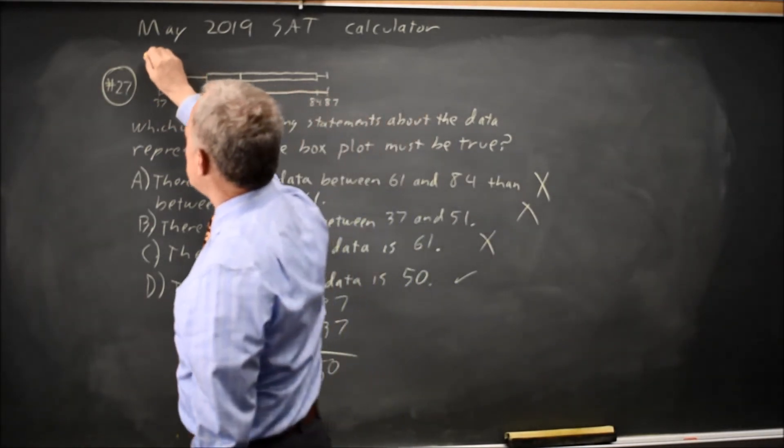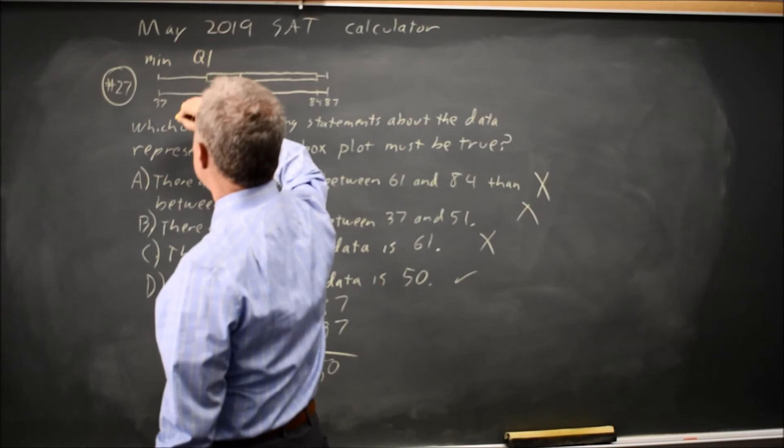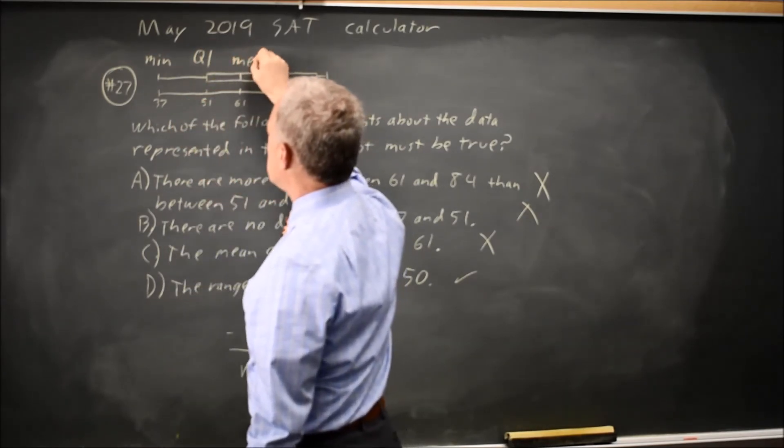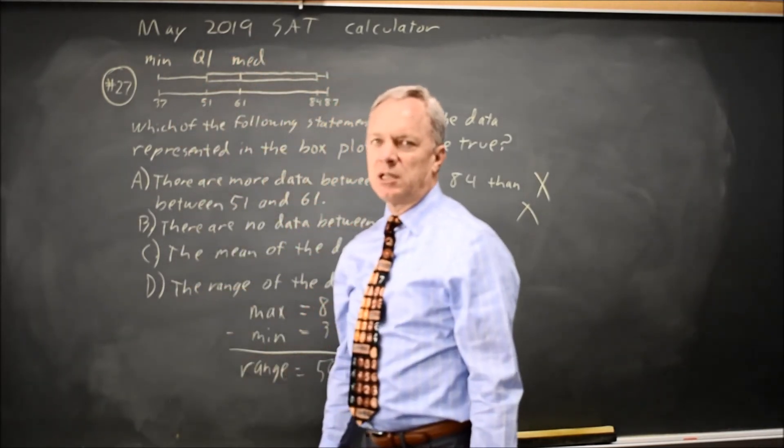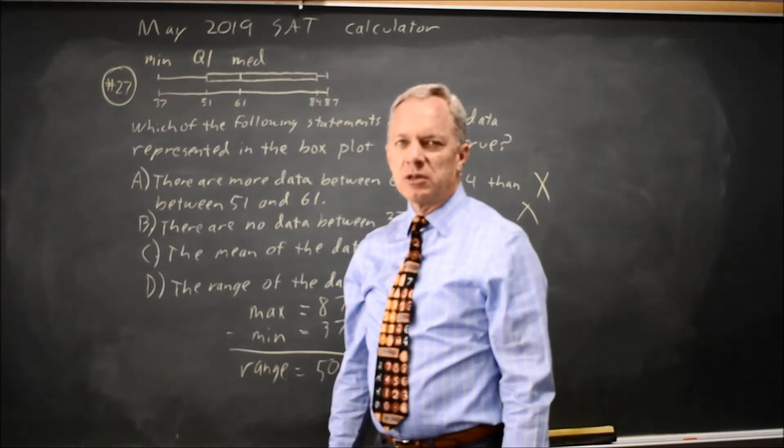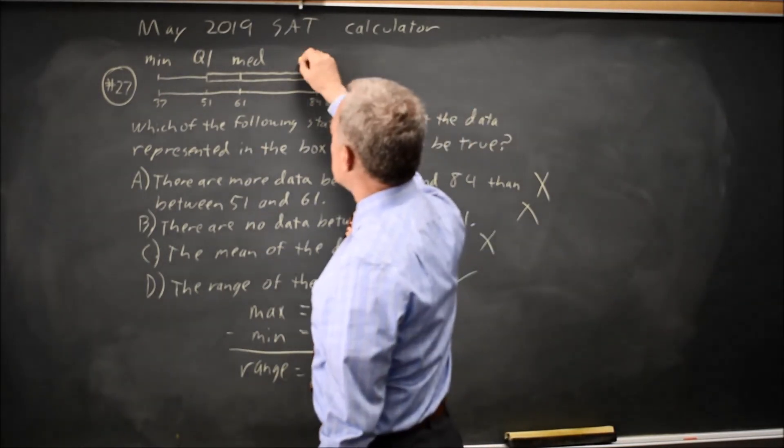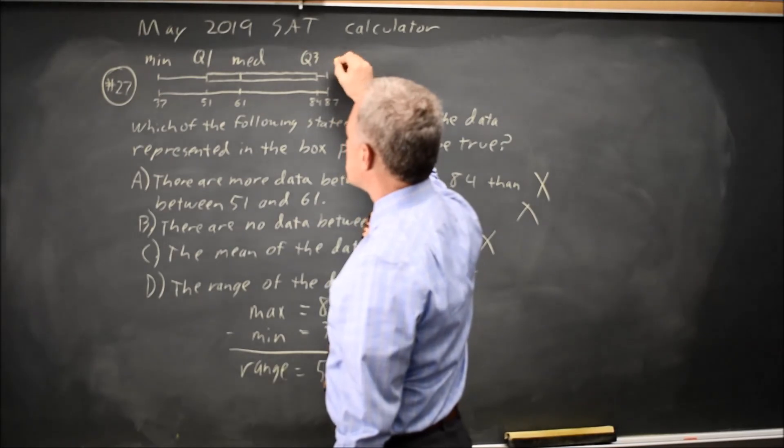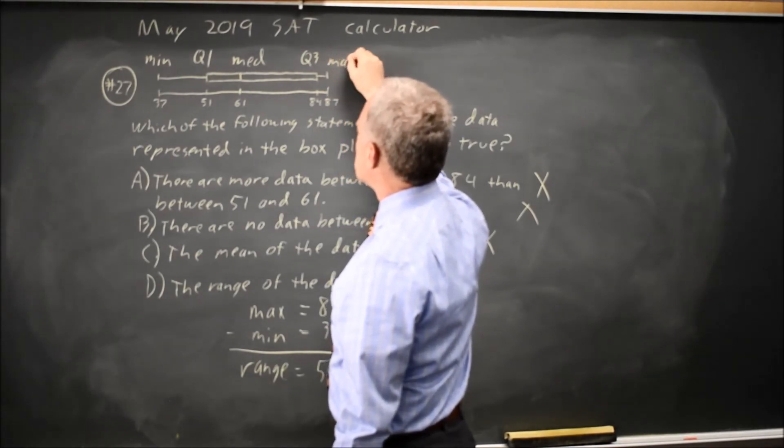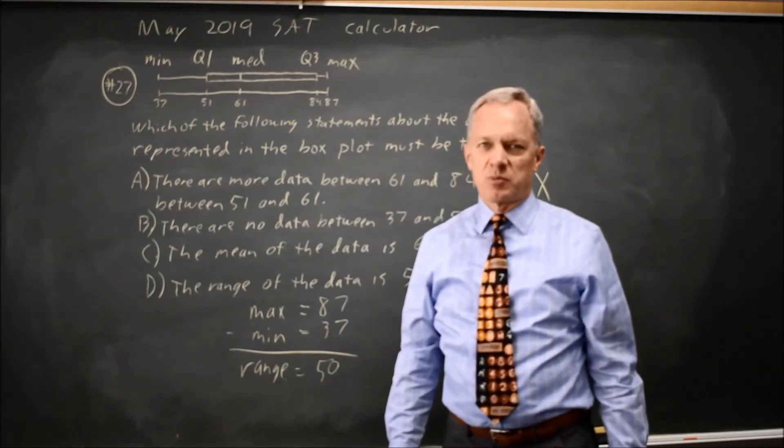The important thing with box plots is the five number summary. The minimum, the first quartile, the 25th percentile. The median, which is the 50th percentile. The middle number, if they're written in order smallest to largest. The third quartile, the 75th percentile, and then the maximum. Those are the five numbers displayed on the box plot.